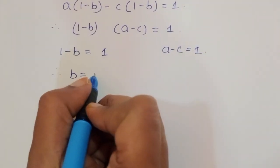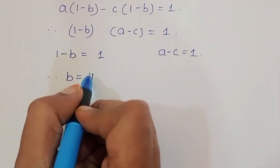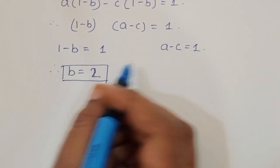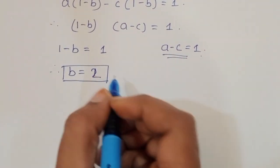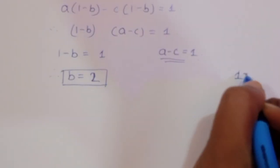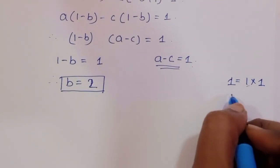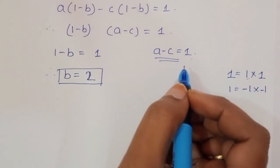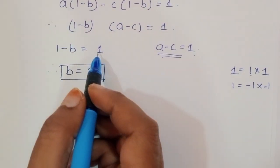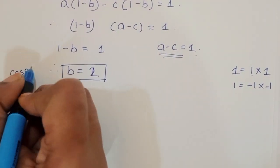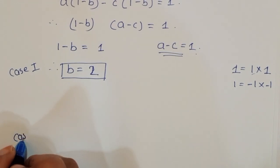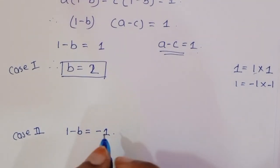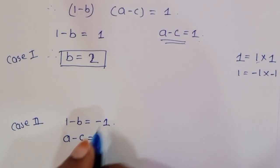Since the product equals 1, there are two cases. Case 1: (1 minus b) = 1 and (a minus c) = 1, giving b = 0. Case 2: (1 minus b) = minus 1 and (a minus c) = minus 1.